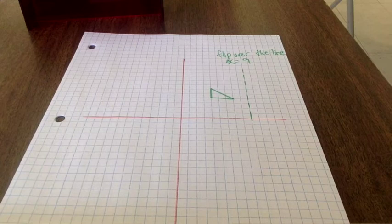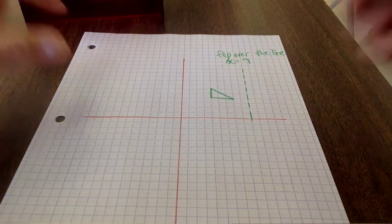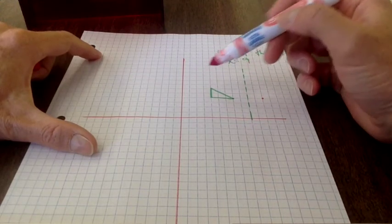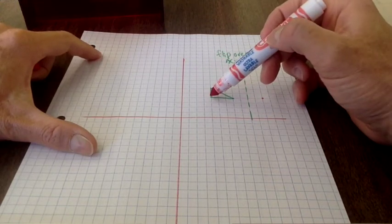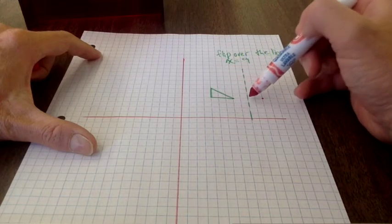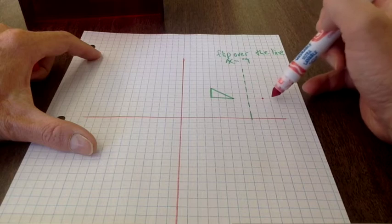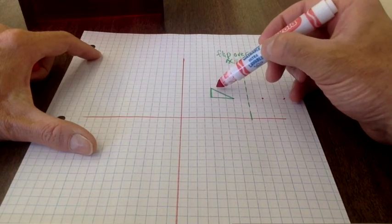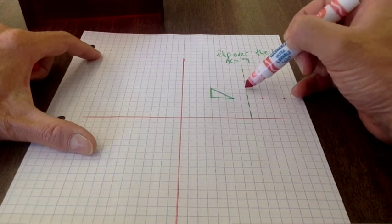Then I'm going to do two past the line: one, two. Then the next point, I start here: one, two, three, four, five; one, two, three, four, five. My third point: one, two, three, four, five; one, two, three, four, five.